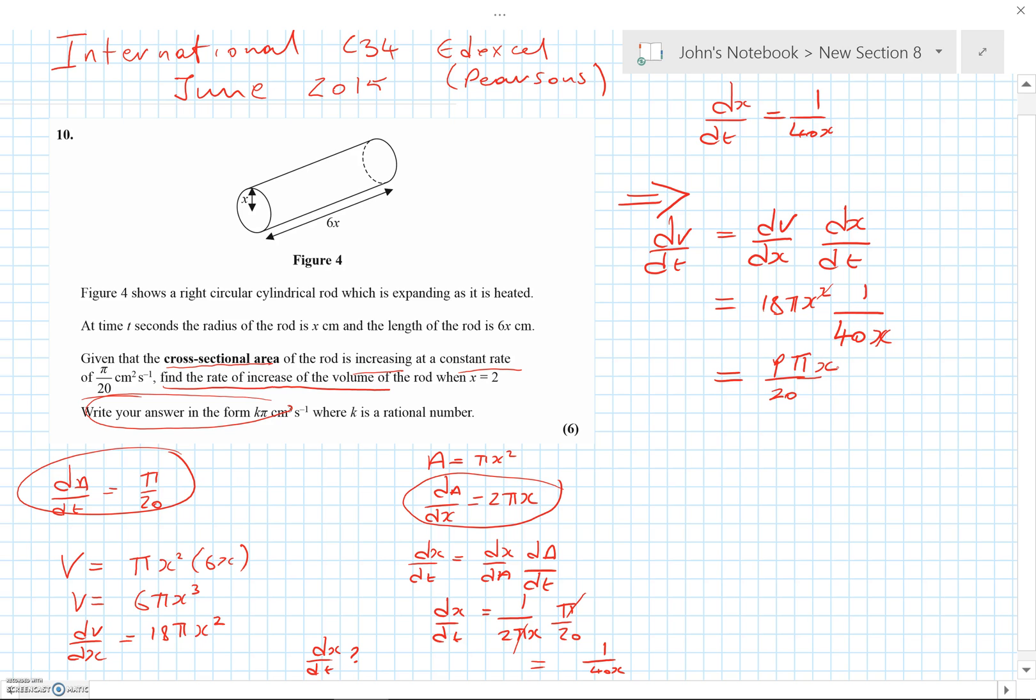Right, now that's a general expression for dV/dt. They've asked for when it actually equals 2. So when x equals 2, dV/dt is equal to 2 times 9π over 20, which is equal to 9π over 10, or nine-tenths π. And that's the answer.